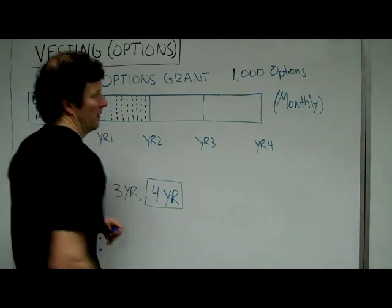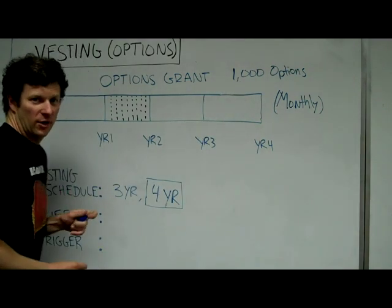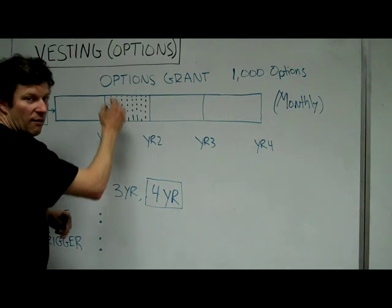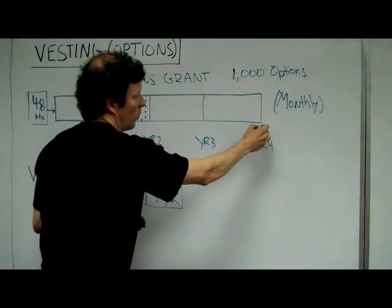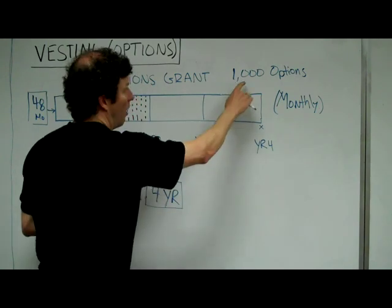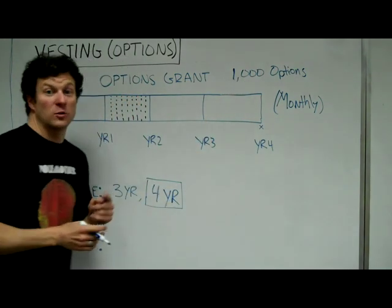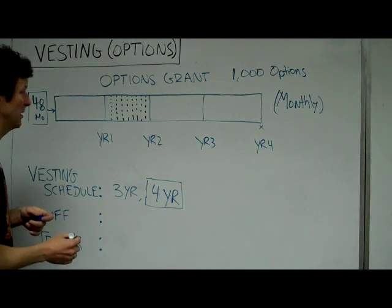I'd have to divide 1,000 by 48, which I can't do in my head. But you get 1/48th of your options every month until your four-year anniversary of working for the company, in which case all 1,000 options would be yours. That's the concept of vesting.